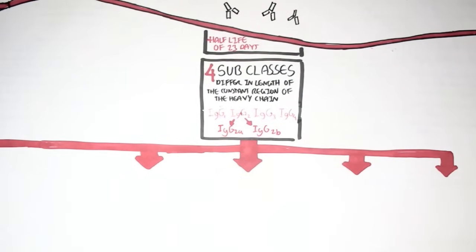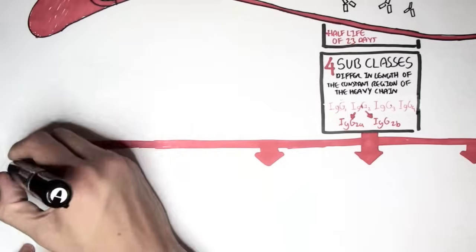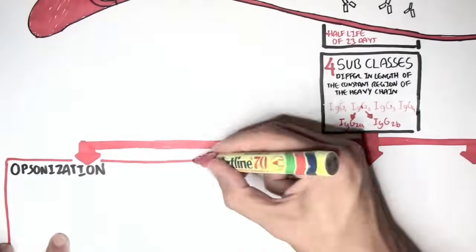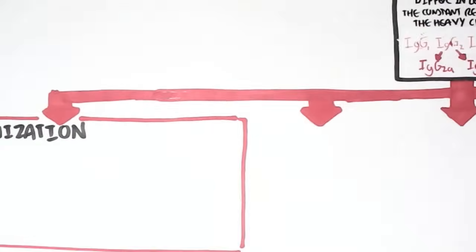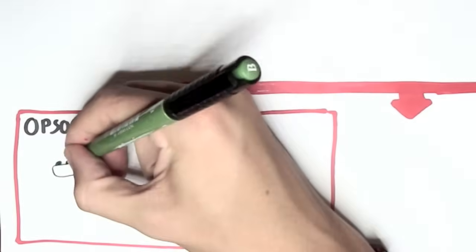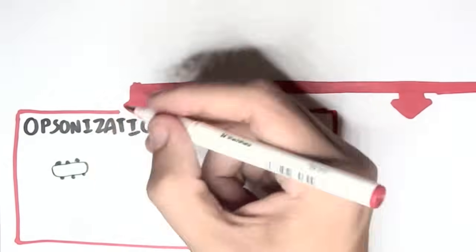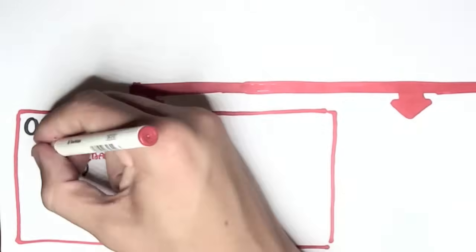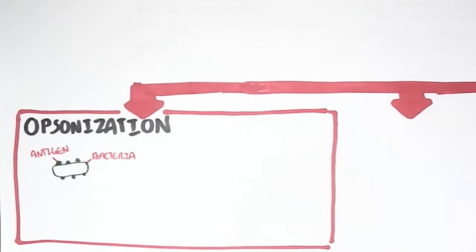So the first thing we'll look at is what IgG does in the body, is perform opsonization. And this is essentially when it coats a pathogen, so that the body can easily destroy it. So, for example,